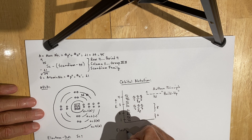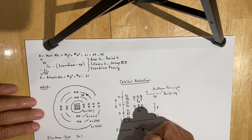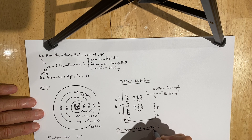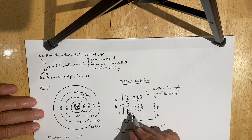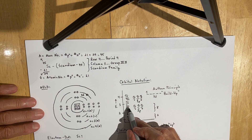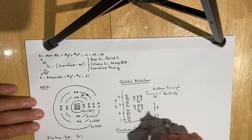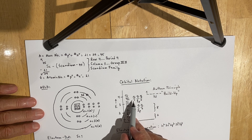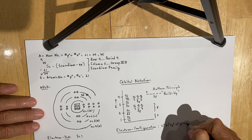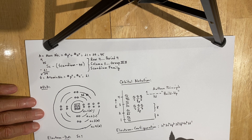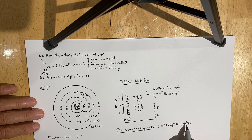If we want to write the electron configuration for scandium, it would look like this: two electrons in the 1S, two electrons in the 2S, six in the 2P, two in the 3S, six in the 3P, and then before we fill the 3D we fill the 4S — so 4S², and then finally 3D¹. The electron configuration of scandium is 1S², 2S², 2P⁶, 3S², 3P⁶, 4S², 3D¹.